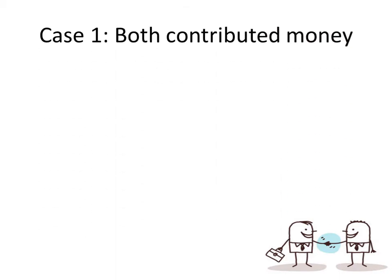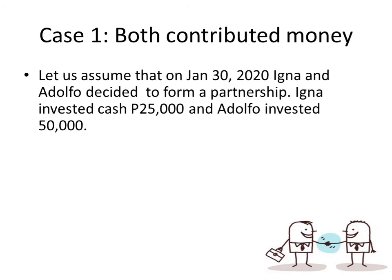Case one: both partners contributed money. We don't have any accounting problem because money has its fair market value and it is not significantly affected by changes in value. Let's assume that on January 30, 2020, Igna and Adolfo decided to form a partnership. Igna invested cash $25,000 and Adolfo invested $50,000.